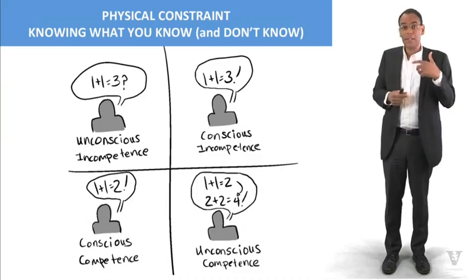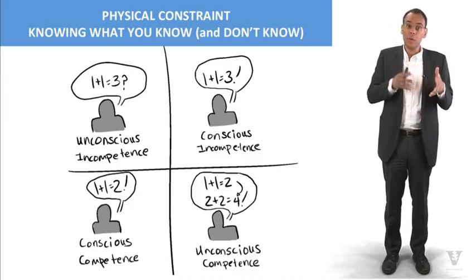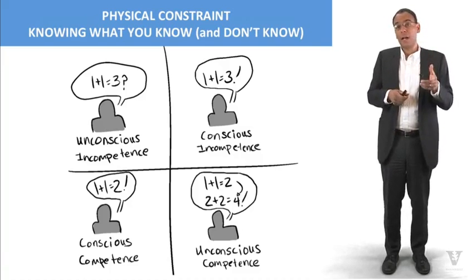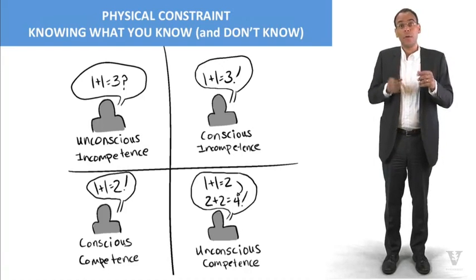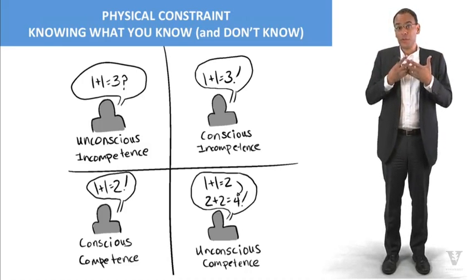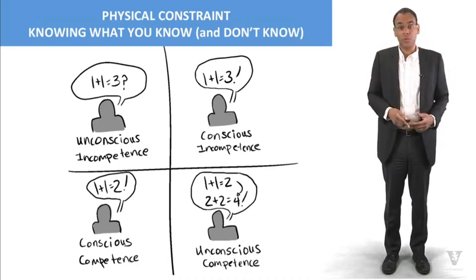Again, unconscious incompetence, we don't know what we don't know. Conscious incompetence, we know what we don't know. Conscious competence, we know what we know. And then unconscious competence, where we don't know what we know. And so this is the cycle that we want to understand and be sure to address when we're stepping into a new kind of problem.